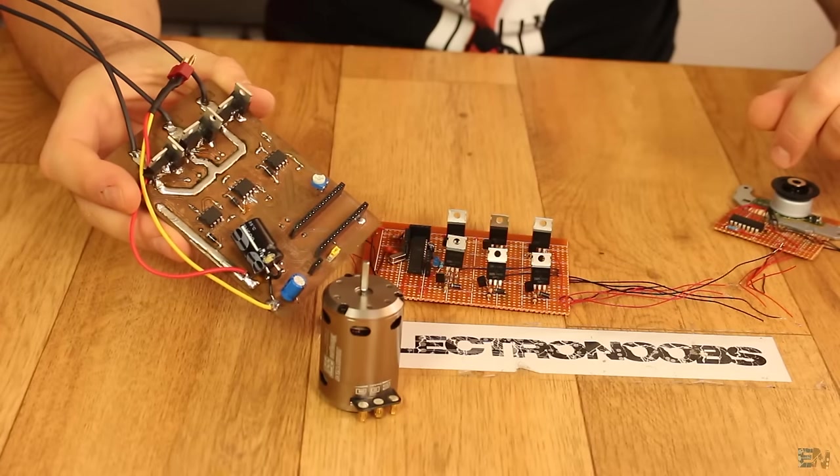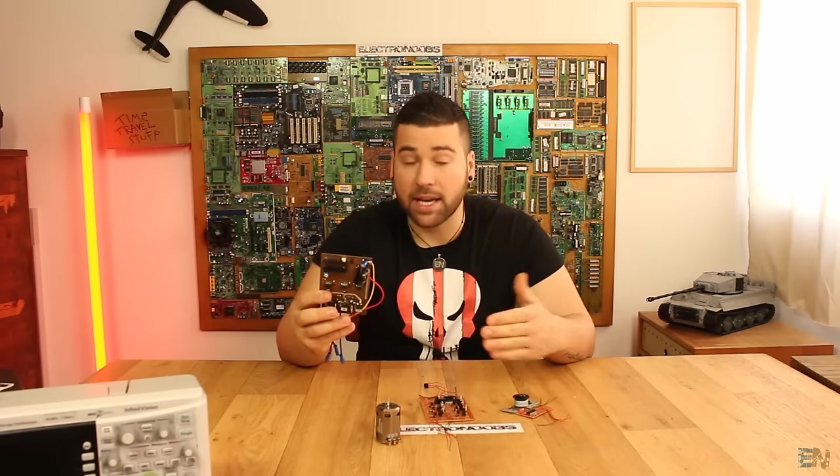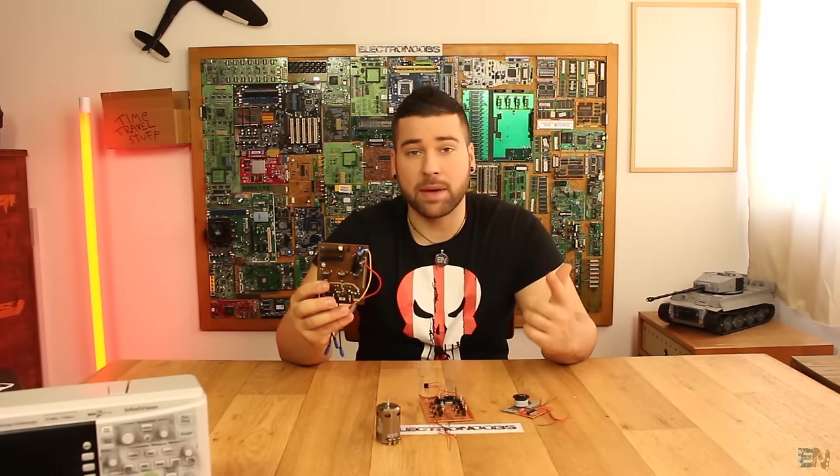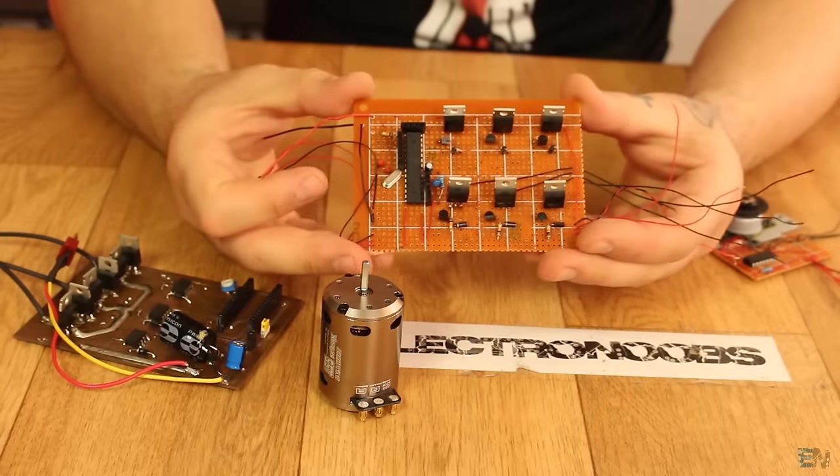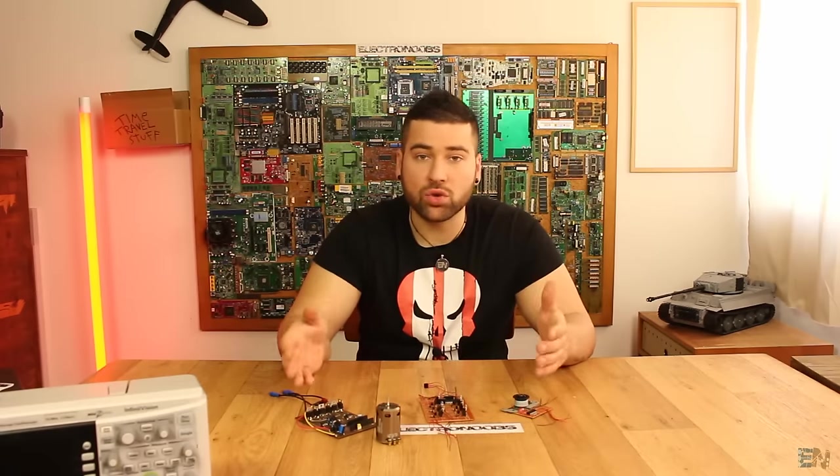In the past tutorial we built an electronic speed controller for brushless motors. This is the board from that tutorial, based on Arduino. This is an ESC for sensorless brushless motors. In that video I showed you how to detect the position of the rotor using the back electromotive force. But that made the circuit quite complicated and the code wasn't the best either. So in this tutorial we will build another electronic speed controller for brushless motors and also improve the code.